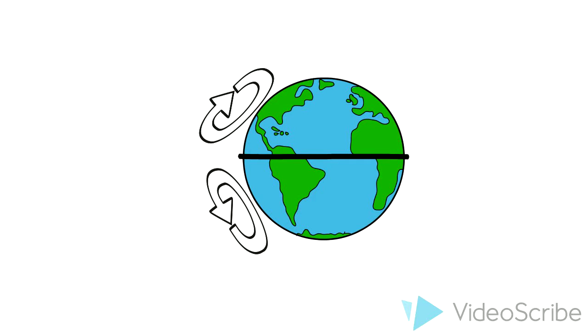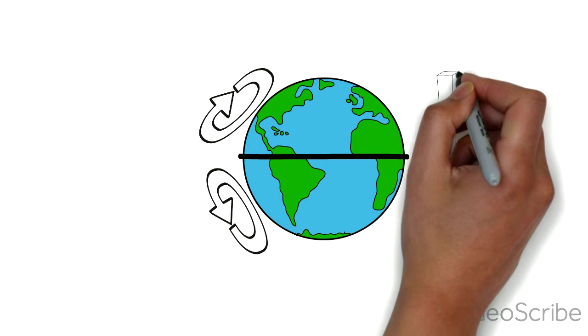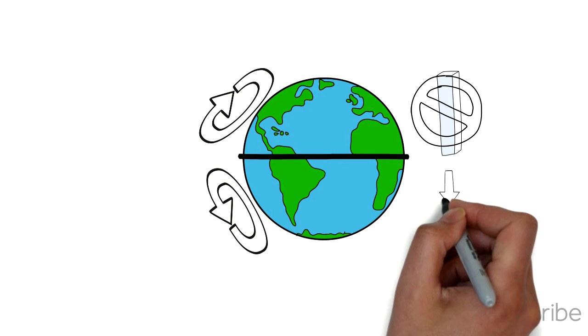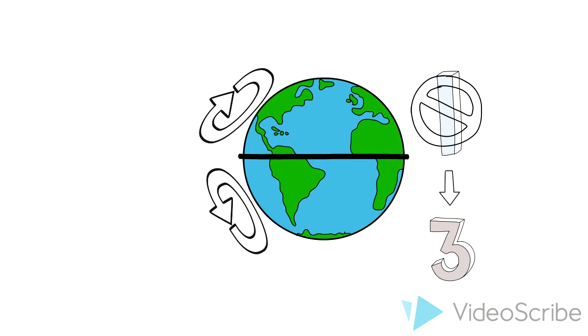That's really interesting, Nate, but that would suggest that there is a single circulation cell for each hemisphere, when in actuality there are three. Here, let me explain.